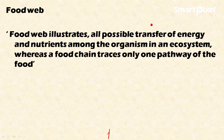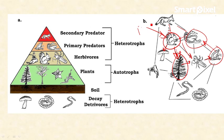The food web includes all the possible transfer of energy and nutrients among organisms. For example, a snake at one trophic level can get energy from a rabbit, a grasshopper, or a frog — it illustrates all possible transfers of energy in an ecosystem. That's it about the food chain and food web. The ecological pyramid will be covered in the next video. Thanks for watching — please subscribe to the channel.